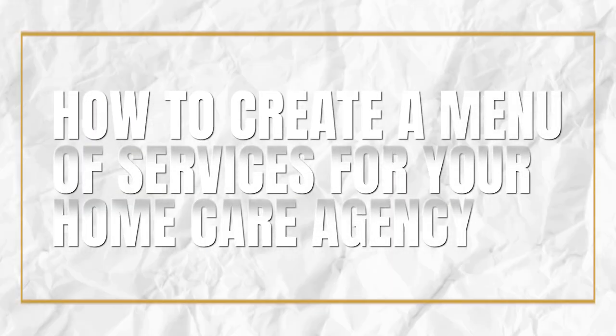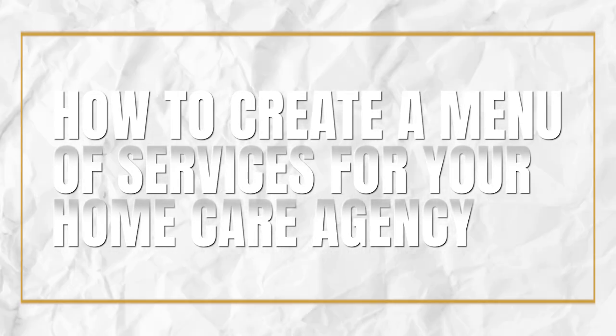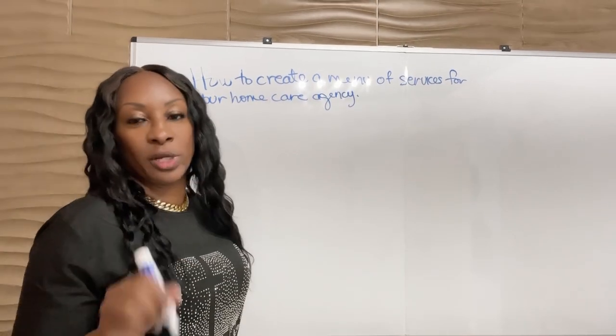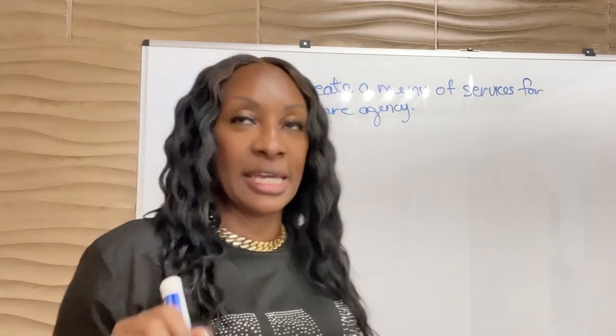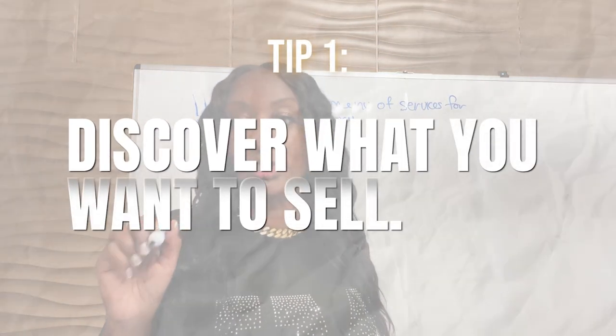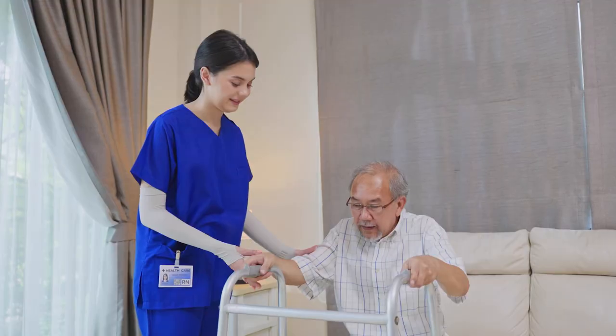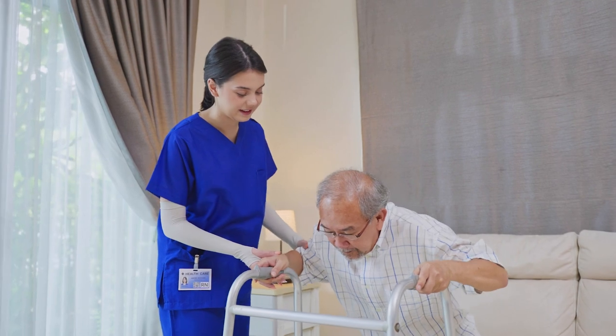Today we're going to be talking about how to create a menu of services for your home care agency — home care business, whatever you want to call it. The first thing you need to do is discover what you want to sell, what services you're offering intentionally. A lot of you think you're not selling anything, but sales is not a bad word. You are selling a service; you are a solution to the problem that people have who want to stay at home and need some support and guidance.